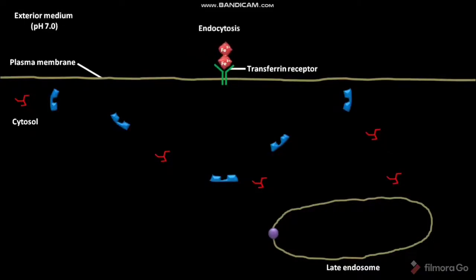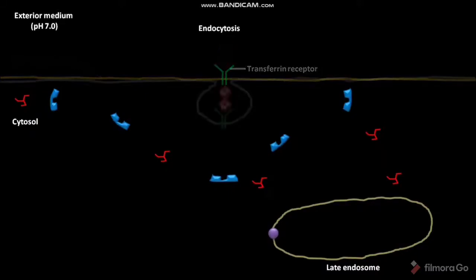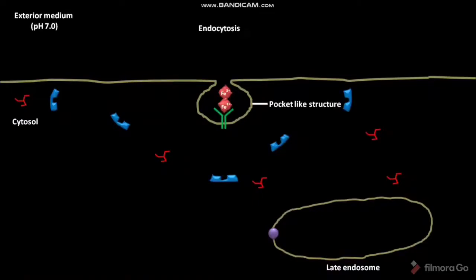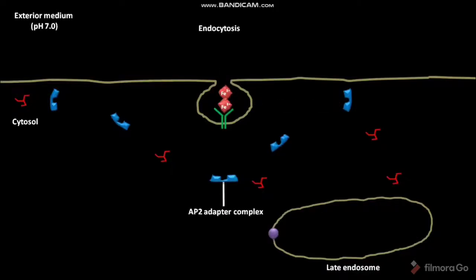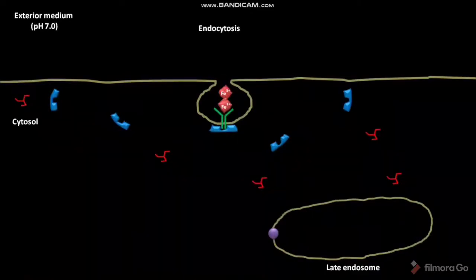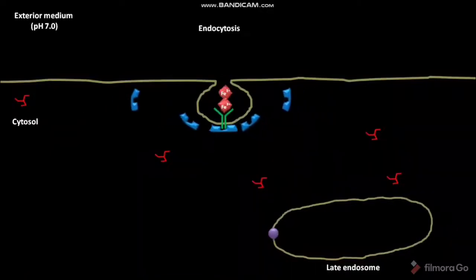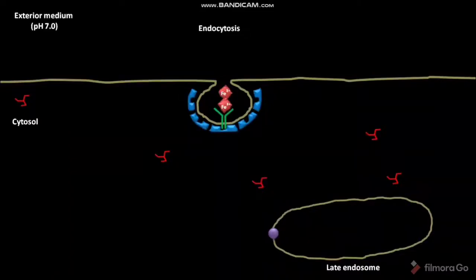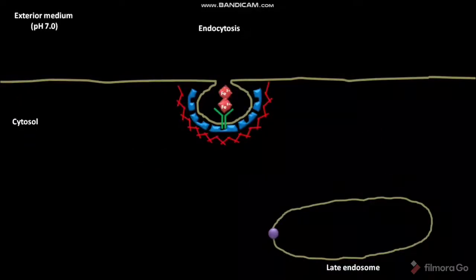During endocytosis, the plasma membrane invaginates to form a pocket-like structure. This pocket-like structure contains the ferrotransferrin-transferrin receptor complex. The cytosolic AP2 adapter complex interacts with the tail of the transferrin receptor. Other AP2 adapter complexes then assemble around the pocket, forming a clathrin-coated pocket.